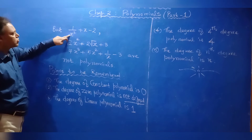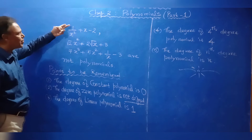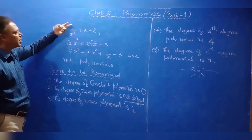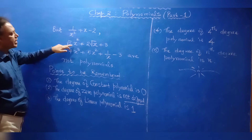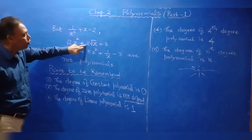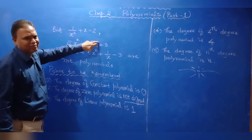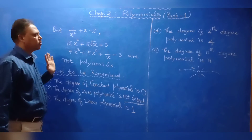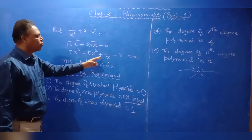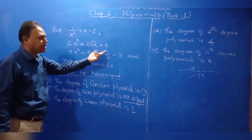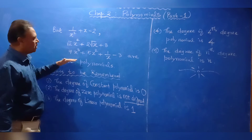However, 1/x squared plus x minus 2 is not a polynomial because 1/x squared equals x power minus 2, which has a negative exponent. Similarly, 2 root x can be written as x power 1/2 — a fraction — so that is also not a polynomial. Likewise, 1/x equals x power minus 1, which is negative, so not a polynomial. The exponent should only be a whole number.